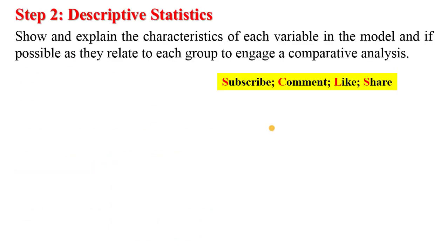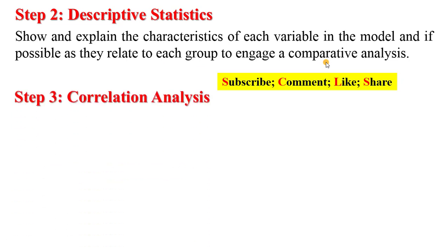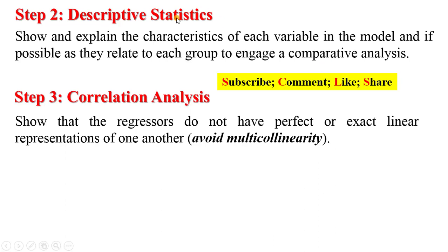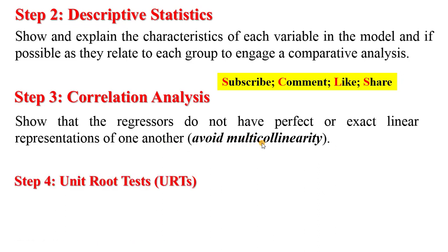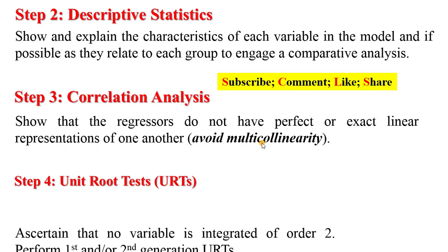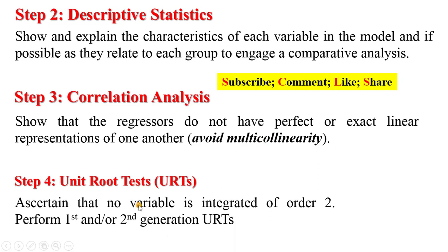Step two says describe the data: show and explain the features of each variable in the model, and if possible show how they relate to one another within the group to enable comparative analysis. Step three: perform correlation analysis by showing that the regressors do not have exact, perfect, or linear dependence on one another — in other words, avoid multicollinearity. Step four: perform unit root tests to ascertain that no variable is integrated of order two; you can use either first or second generation unit root tests.